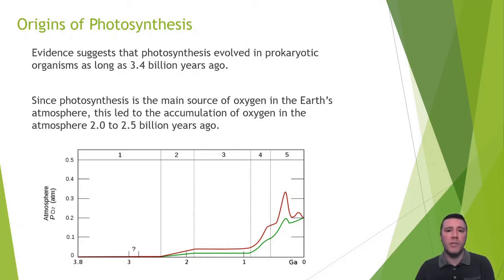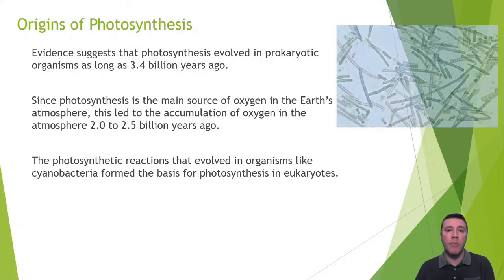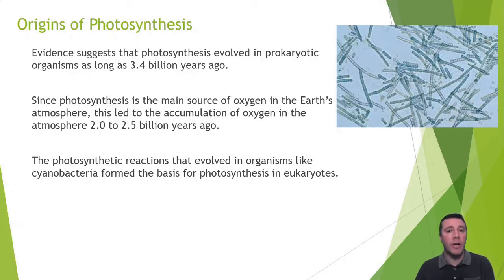Photosynthesis likely evolved in organisms not unlike modern-day cyanobacteria. Cyanobacteria are prokaryotic organisms that carry out oxygenic photosynthesis in much the same way as plants and algae do. Prokaryotic organisms like them were likely involved in serial endosymbiosis that gave rise to the ancestors of all plants and algae.